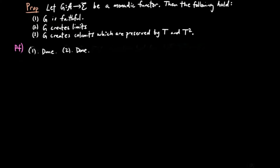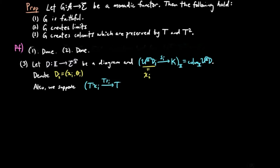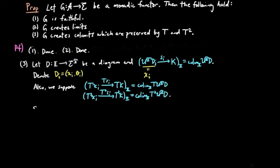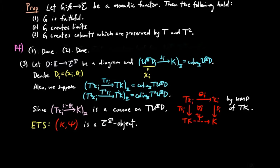We have proven (1) and (2); it remains to prove (3). Let D be a diagram in the Eilenberg-Moore category and SI be the colimit of UTD. We denote DI by (Xi, thetaI) as before, so the domain of the colimiting cone is Xi for each I. We suppose that TSI is the colimit of T∘UTD and T²SI is the colimit of T²∘UTD. Since SI∘thetaI is a co-cone on T∘UTD, by the universal mapping property of TK, there exists a unique E-morphism psi such that the square commutes for each I. It is then enough to show that (K, Xi) is an Eilenberg-Moore object by the same logic as before.